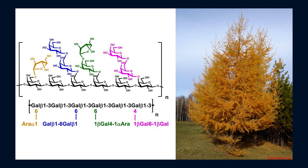Arabinogalactans belong to a major group of carbohydrates known as hemicelluloses, which are non-starch polysaccharides that occur abundantly in the primary and secondary cell walls of plant cells and are widely spread throughout the plant kingdom. Dietary sources include carrot, radish, pear, maize, wheat, and tomato, in addition to medicinal herbs such as echinacea and turmeric. There are two commercial sources as a prebiotic: one from acacia and one from the North American larch tree.